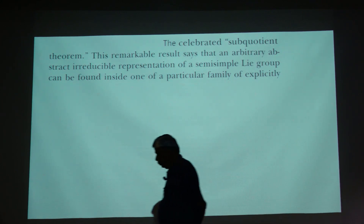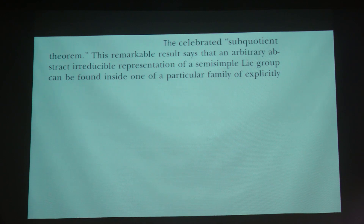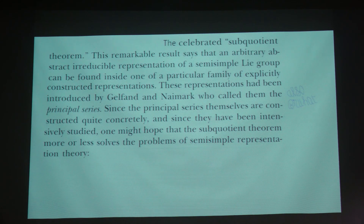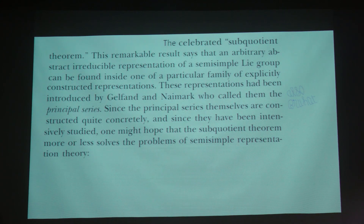The celebrated sub-quotient theorem says that an arbitrary abstract irreducible representation of a semi-simple Lie group can be found as a sub-quotient of a particular family of explicitly constructed representations. These representations were introduced by Gelfand and Naimark and also Bruhat, who called them the principal series. Since the principal series are constructed quite concretely and have been intensively studied, one might hope the sub-quotient theorem more or less solves the problems of semi-simple representation theory — but that is a sweeping statement. Induced representations and irreducible representations are topics of great interest being pursued even today.